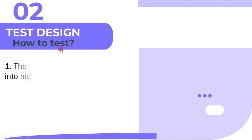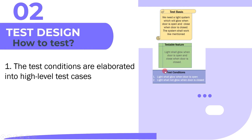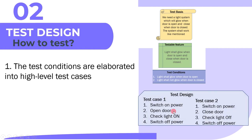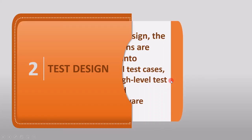During test design, test conditions are taken as input to write high-level test cases. For example: test case one is switch on power, open door, check light on, switch off power. Test case two is switch on power, close door, check light off, switch off power. These two test cases cover the two test conditions. Along with writing test cases, we also identify defects in the test basis, because while writing the test case we refer to the test condition and test basis, and if we find any mistake we report it.